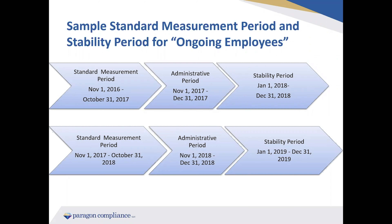The next slide is a review of measurement periods for ongoing employees. In this example, we have a standard measurement period starting November 1, 2016, running through October 31, 2017. This is the 12 months where we look at an employee's hours and see if their average is over that 130 average hour threshold. Following that, there's an administrative period from November 1, 2017 through December 31, 2017 — the period of time the IRS allows employers to make offers of coverage, often lining up with your open enrollment period. Following the administrative period is your stability period, January 1, 2018 through December 31, 2018, where employees are locked into their ACA status based on hours worked during the standard measurement period.